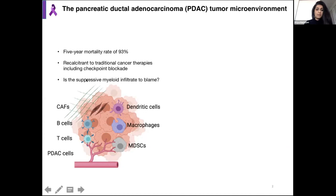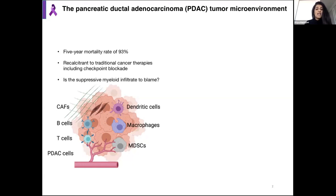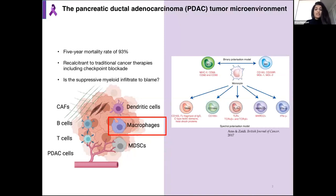This is a simplified depiction of the tumor microenvironment. You can see there are many different cell types at play that create that suppressive microenvironment. In PDAC specifically, there's a very large infiltrate of myeloid lineage cells, including dendritic cells, MDSCs, myeloid-derived suppressor cells, neutrophils, and macrophages. There's wide heterogeneity of phenotypes within each immune cell type. In our lab, we're interested in macrophages — specifically TAMs — and the mechanisms by which they modulate immune suppression.